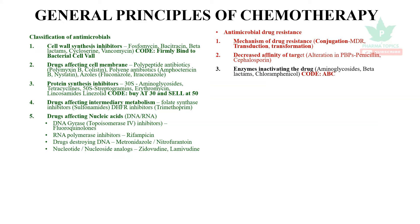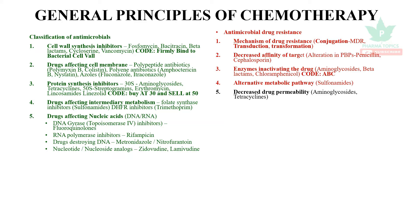Second: enzymes inactivating the drug — code ABC: Aminoglycosides, Beta-lactams, and Chloramphenicol — caused by beta-lactamase. Third: alternative metabolic pathway — example: Sulfonamides. Fourth: decreased drug permeability — Aminoglycosides, Tetracyclines. Fifth: efflux pumps — Tetracyclines, Erythromycin, Chloroquine. Note: decreased affinity and enzymes cause single-step mutation; efflux pumps generate multiple-step mutation.